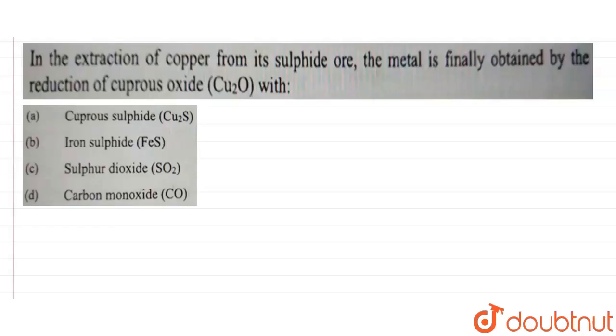the question, and the question says that in the extraction of copper from its sulfide ore, the metal is finally obtained by the reduction of cuprous oxide, that is Cu2O, with—and here we have four options.